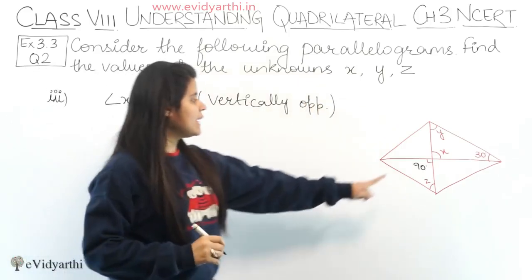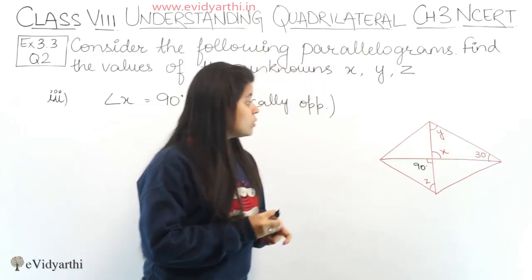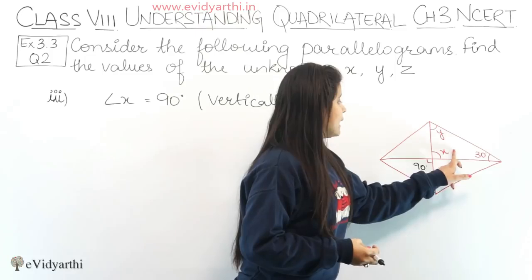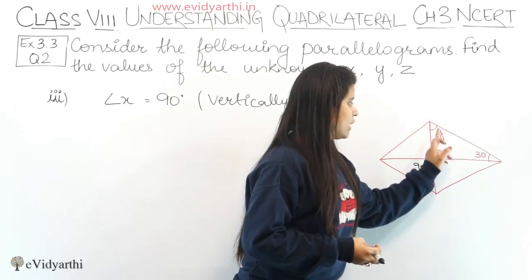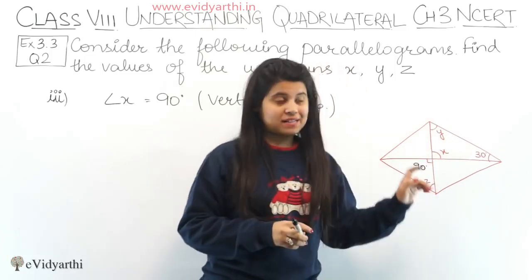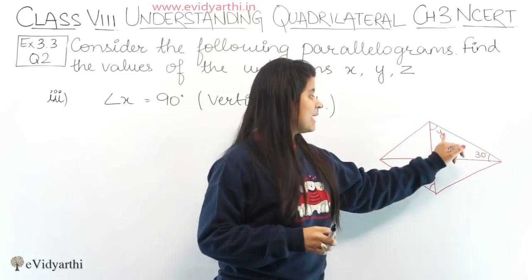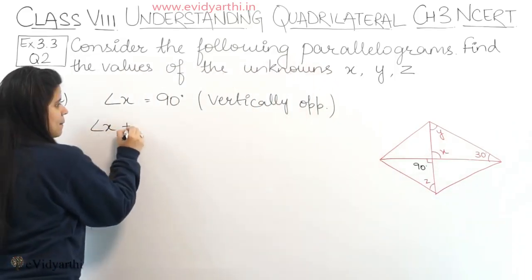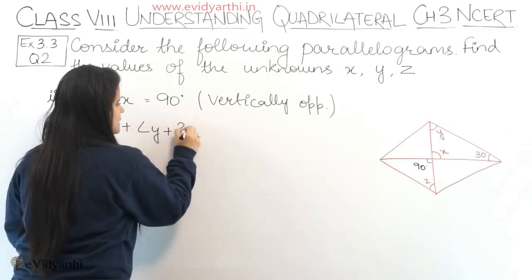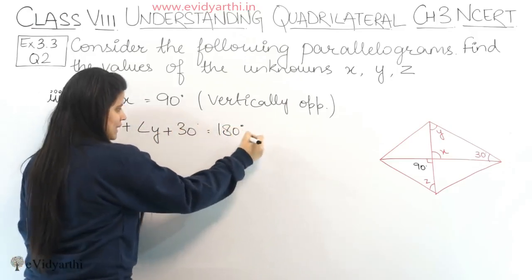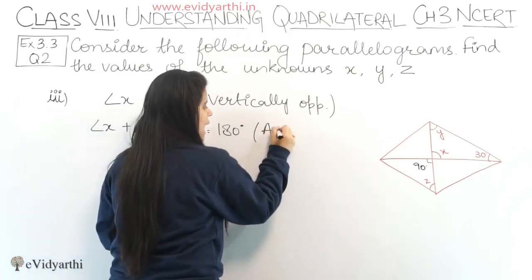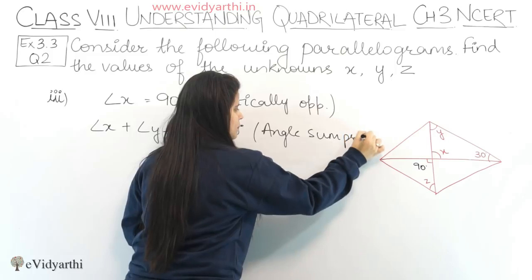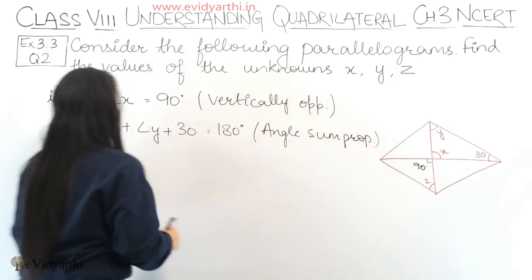Next, now that we have x, we can find y. Here, a triangle is formed. Using the angle sum property of a triangle: angle x + angle y + 30° = 180°.